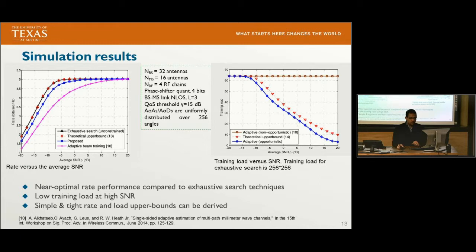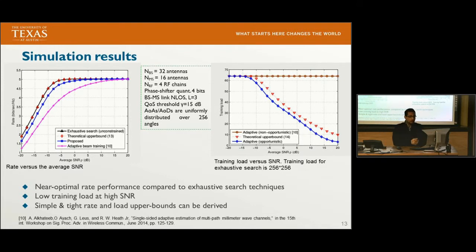Looking at the training overhead, the top line shows the constant training overhead of non-opportunistic hierarchical beam training, which always looks for the highest resolution beam. The red is our theoretical upper bound. The blue plot shows that as the SNR increases and the mobile station comes closer to the base station, the training overhead of the proposed opportunistic technique reduces, because training is terminated once the threshold is satisfied — we don't need to spend training time looking for the highest resolution beam.